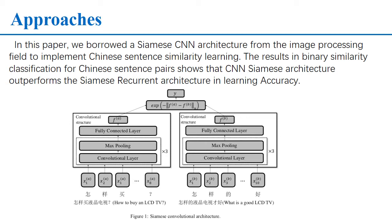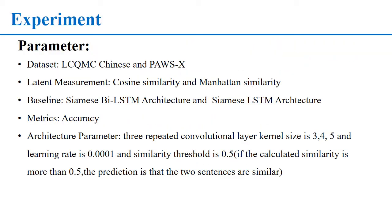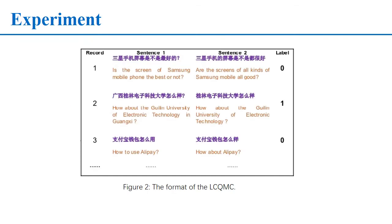Based on the similarity threshold, we can evaluate the accuracy after learning. For our experiments, we use the LCQMC Chinese dataset and the PiPaX English dataset. We use cosine similarity and Manhattan similarity, and we choose accuracy as our metric. The three repeated convolutional layers have kernel sizes of 3, 4, and 5. The learning rate is 0.0001, and the similarity threshold is 0.5. This is the format of the LCQMC dataset.